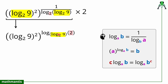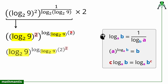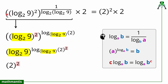Now I can apply the second property because both the outer base and the logarithmic base are log base 2 of 9. The remaining power of 2 moves to the argument using the third property, making it 2 squared. The expression is now of the form a raised to log base a of b, so the result is b, which equals 2 squared, that is 4. So the full expression simplifies to 4 multiplied by 2, giving a final answer of 8.